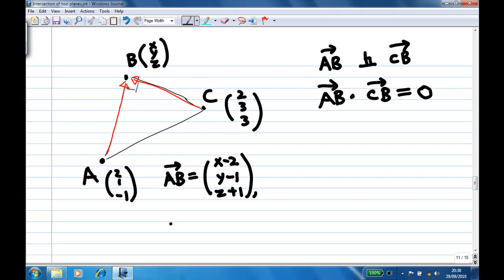And what is CB? CB, take the difference between coordinate of C and B. Take B minus C now, the end point minus beginning point. Take B minus C, the end point is B, initial point is C. So x minus 2, y minus 3, and z minus 3.